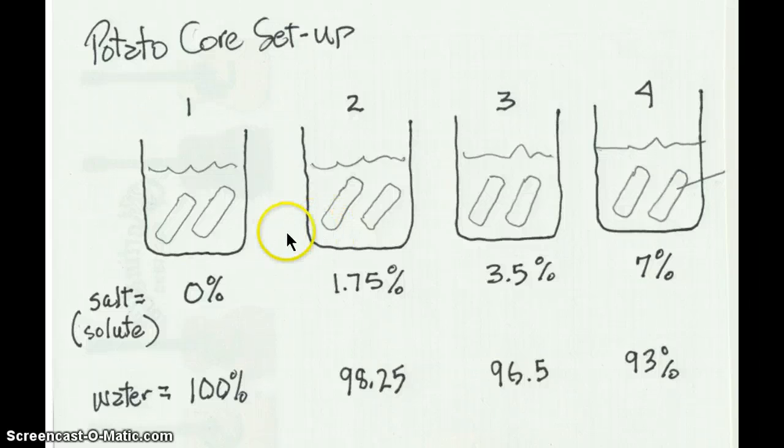Put the cores in the four cups and let them sit for about eight hours. At the end of eight hours, take them out, pat them dry with a paper towel and measure them again. They're going to have changed in volume.